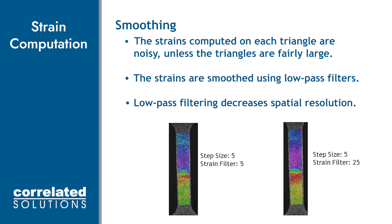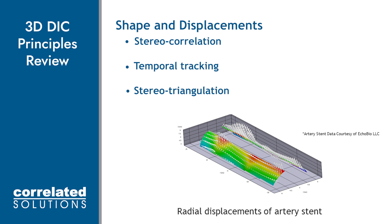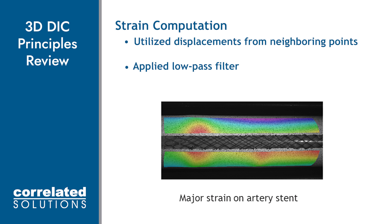In review of the 3D DIC principles covered: we track shapes and displacements by stereo correlation matching the subsets between cameras, temporal tracking throughout time similar to 2D DIC, and then stereo triangulation which uses the calibration model to build a 3D reconstruction. Strain computations are made using displacements of neighboring points and then a user defined low-pass Gaussian filter is applied. This is how 3D DIC obtains full-field 3D shape, deformation, and strain data on any surface that we are able to speckle and image with two cameras.